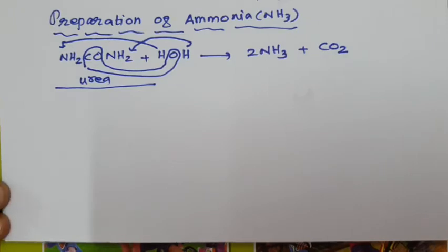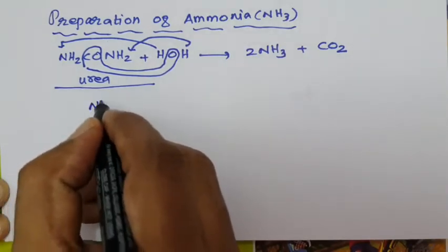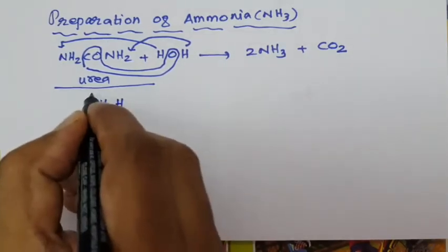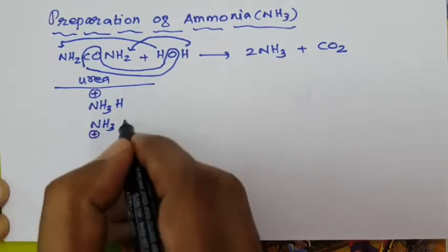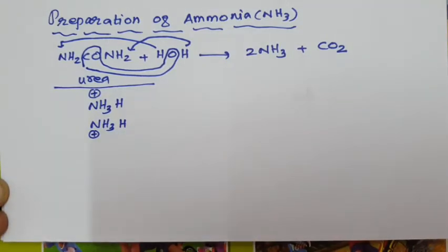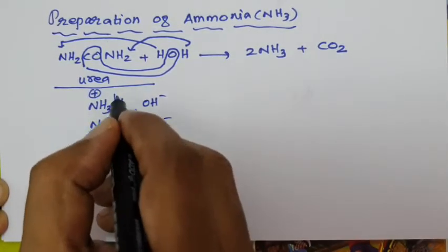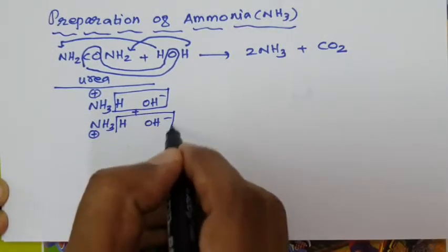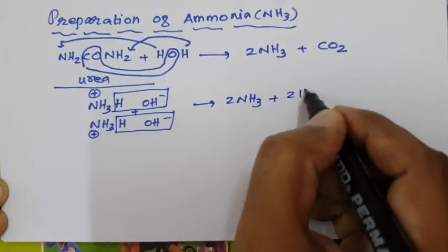Second method: any ammonium salt undergoes hydrolysis to give ammonia. The ammonium ion NH4+ combines with hydroxide OH−. The H and OH− are removed as H2O, giving ammonia NH3 plus loss of a water molecule.